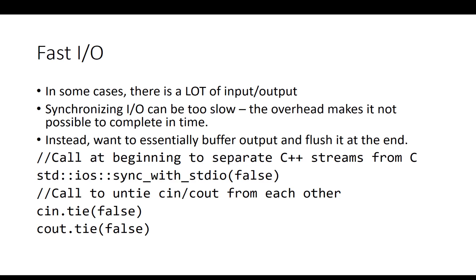If you ever have an interactive problem — where you read data, write something out, then read and write again while interacting with the judge — you really have to control your input and output carefully. The more control you want, these settings give you that. ios::sync_with_stdio(false) stops standard C streams from interfering with C++ ones, and unlinking cin from cout stops them from causing system calls when the other is called.